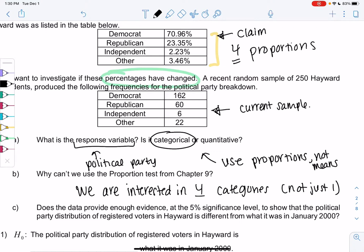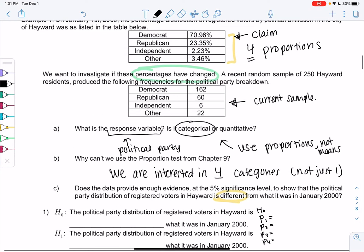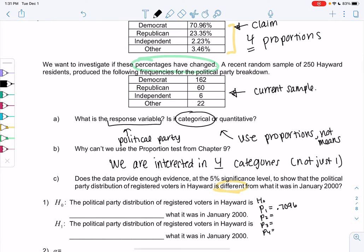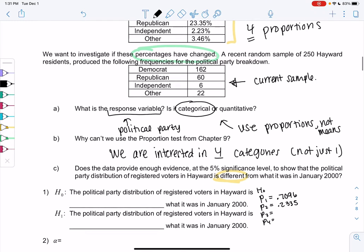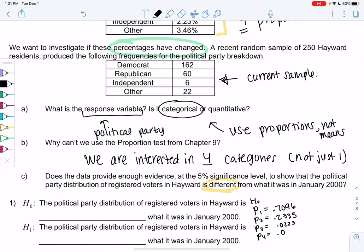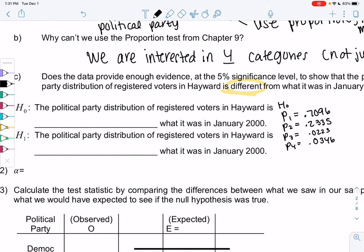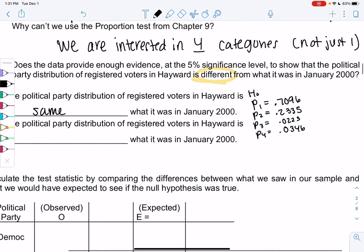Let's see if we can do a hypothesis test. Does the data provide enough evidence at 5% to show that the political party distribution in Hayward is different from what it was in January 2000? This one's a little harder to write as a formula because there's lots of proportions. If I wanted to write it as a formula, there'd be four Ps. So P1 would be the Democrats at 0.7096, P2 would be the Republicans at 0.2335, Independent at 0.0223, and Other at 0.0346. The easier way to do this is just say that the political party distribution is the same as it was in 2000.